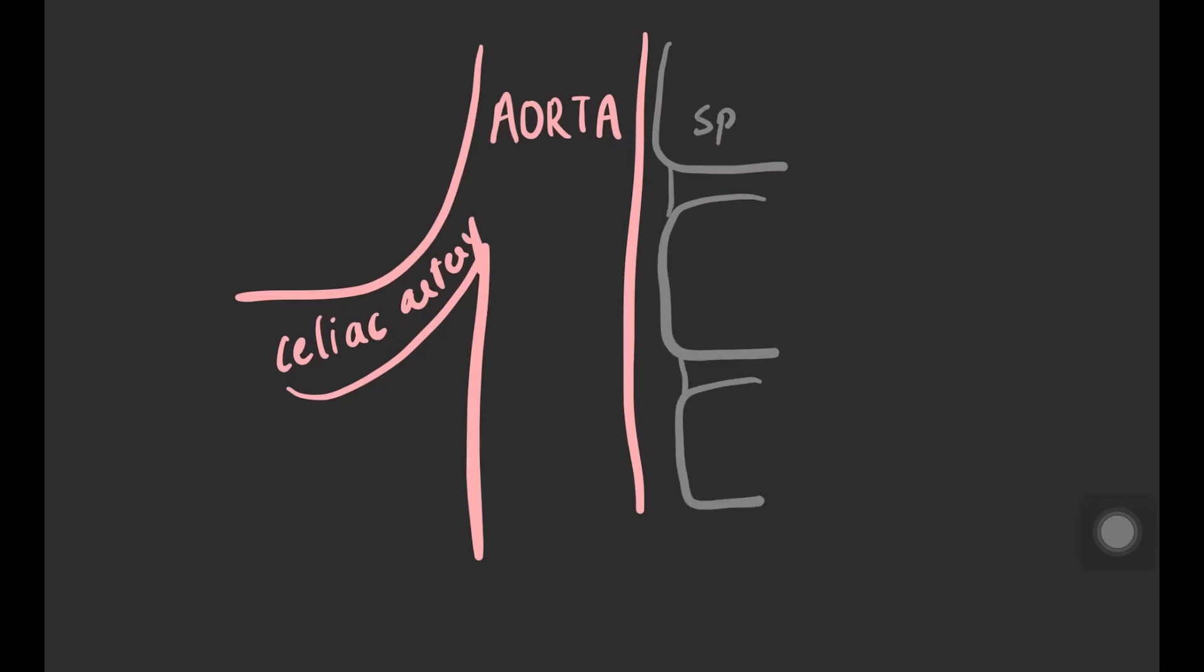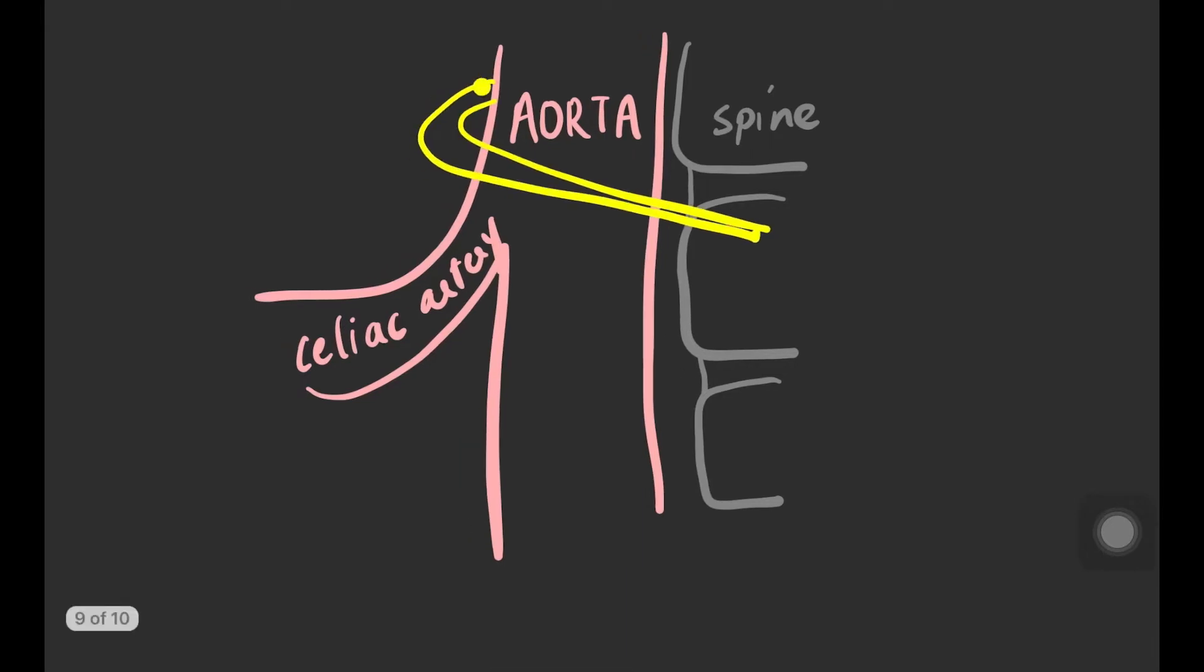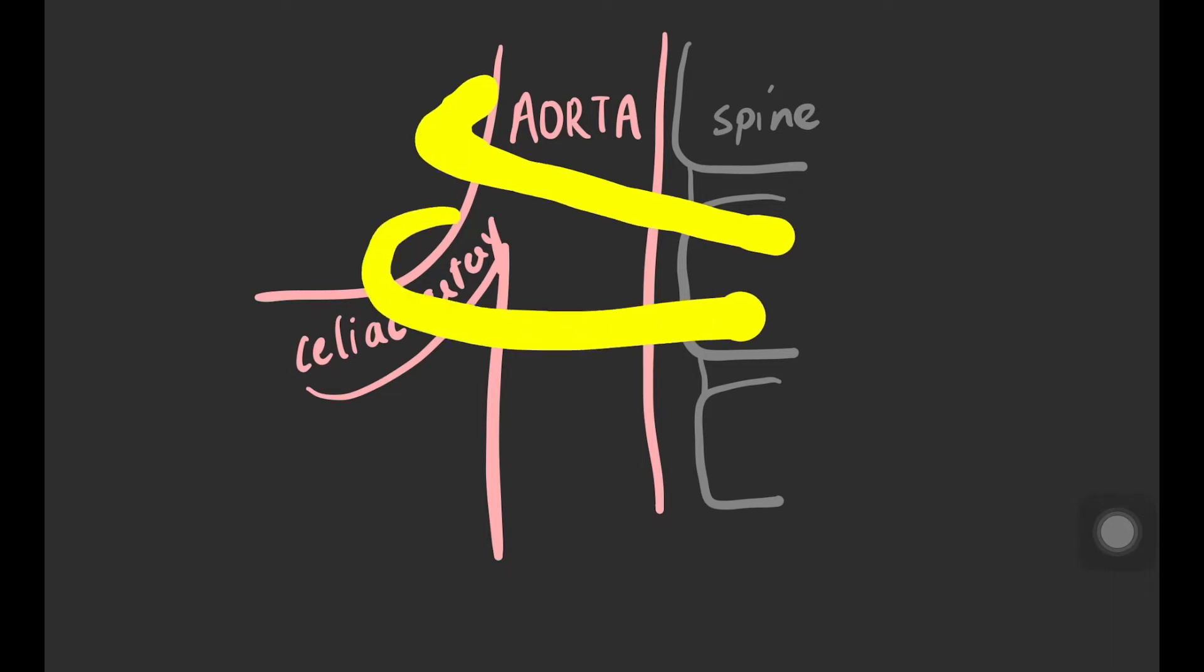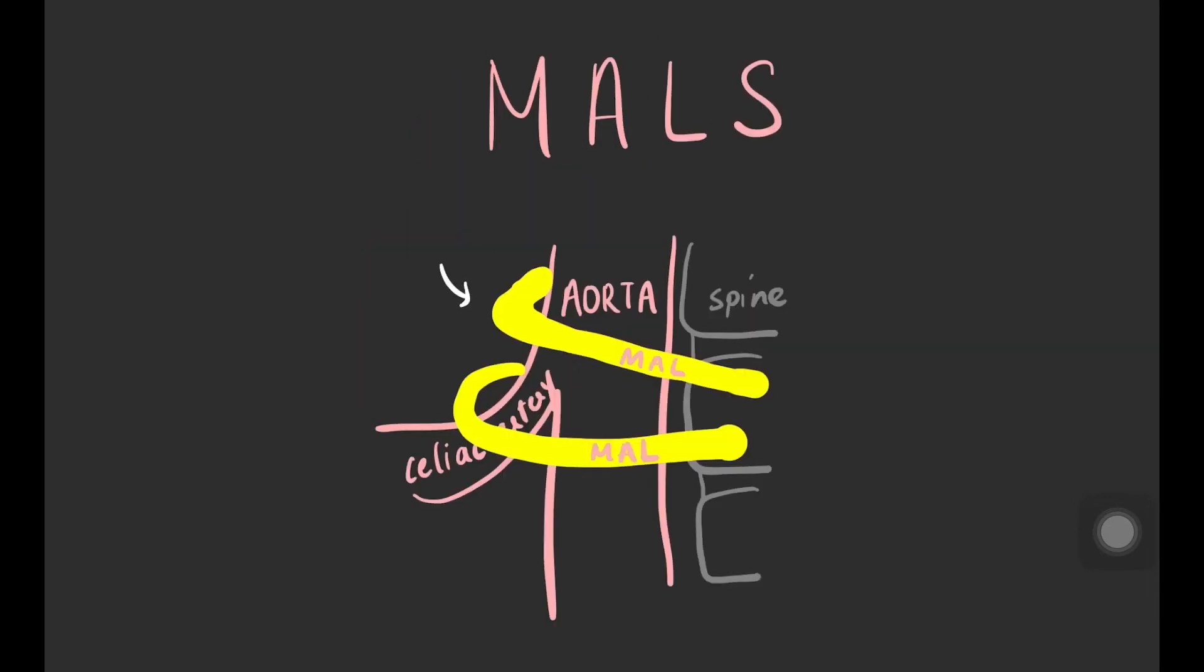Normally it's placed above the celiac artery, but in certain cases it is low-lying and crosses over the proximal portion of the celiac artery, compressing it and causing postprandial pain, weight loss, and abdominal bruit.